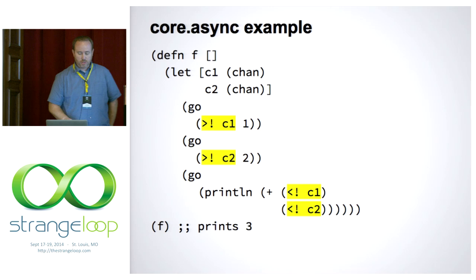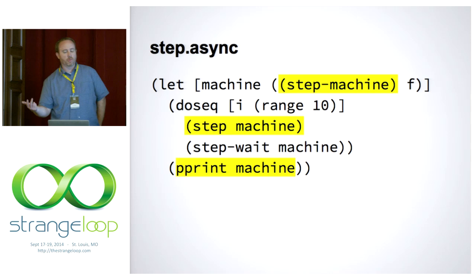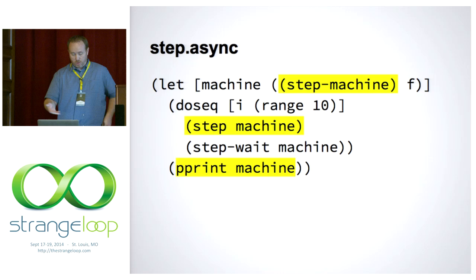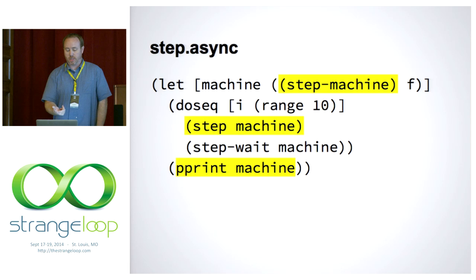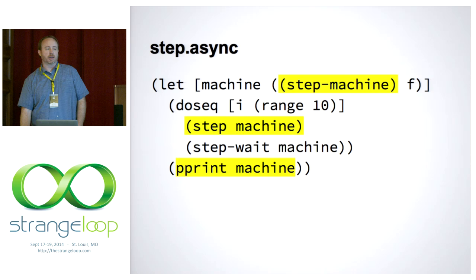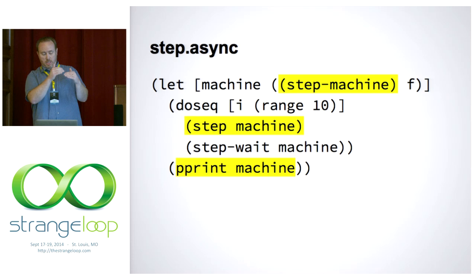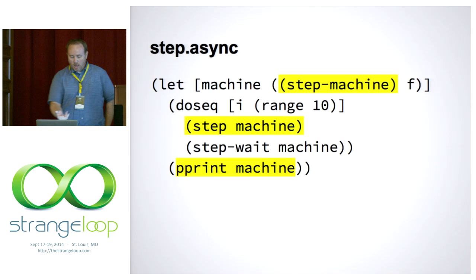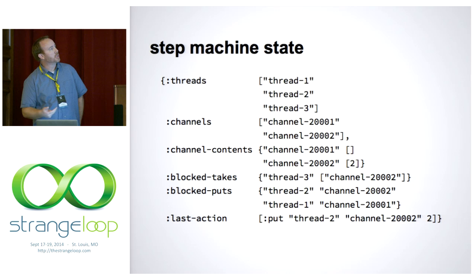If you had a function like this that did async things, you could take it and run it inside of what we call a step machine. This shows creating a step machine — in general you can give it configuration parameters, in this case it just takes all the defaults. You tell the step machine what function it needs to run, and it expects a function that is doing core async stuff inside of it. Then this steps through it an arbitrary number of times, in this case 10 times. You can think of a debugger debugging your regular code where you're stepping line by line — in simplistic terms, it's stepping those threads from core async call to core async call. After stepping it 10 times, we print out the state of the machine.